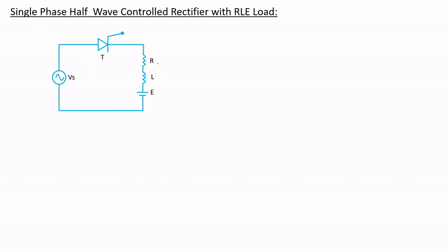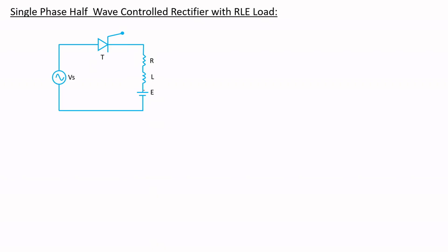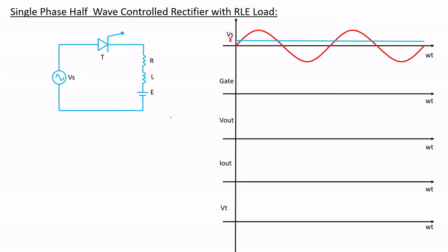Now we are going to see how we are going to analyze this particular circuit. We're going to take a look at the waveforms and in parallel understand the operation through the waveforms — this explanation will give you a clear understanding of how it operates completely. We're going to consider a sinusoidal voltage source and also a constant voltage E. We're going to look at the gate voltage waveform, the output voltage waveform, the output current waveform, and also the voltage across the thyristor.